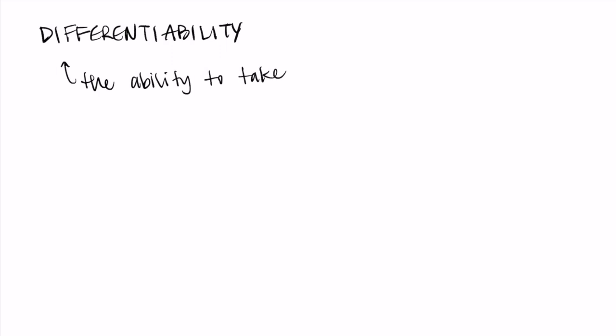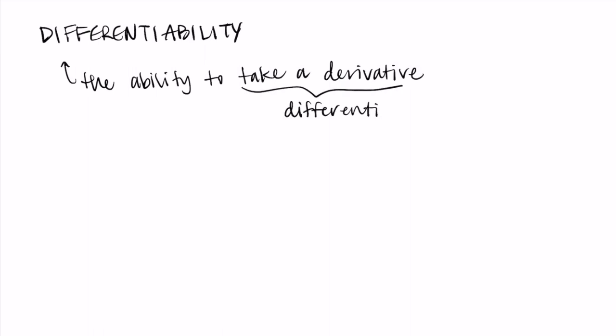Let's talk more specifically about the ability to take a derivative — we call this differentiability. It's just the ability to take a derivative at a point. Instead of saying 'take a derivative' we can say 'differentiate,' so differentiability is the ability to differentiate.